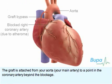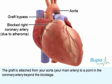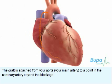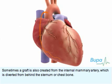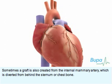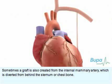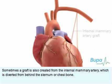The graft is attached from your aorta, your main artery, to a point in the coronary artery beyond the blockage. Sometimes a graft is also created from the internal mammary artery, which is diverted from behind the sternum or chest bone.